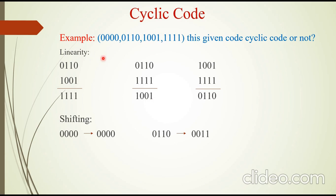So we can say it follows the property of linearity. Now let us check the property of cyclic shifting. I am just taking this codeword 0110. If you rotate 0000 in any direction, it will always be 0000.